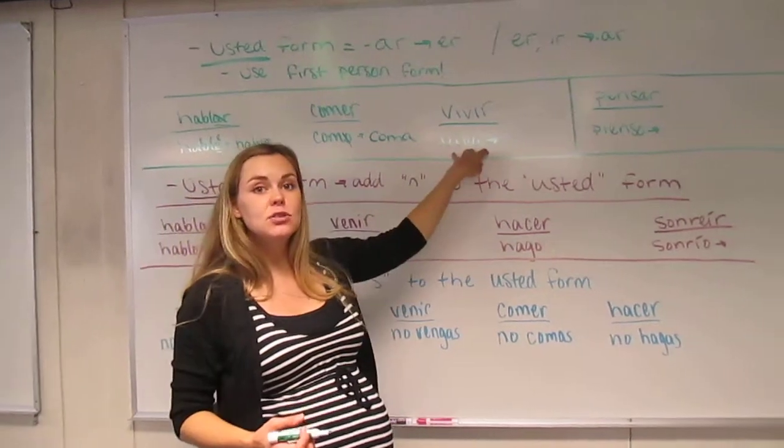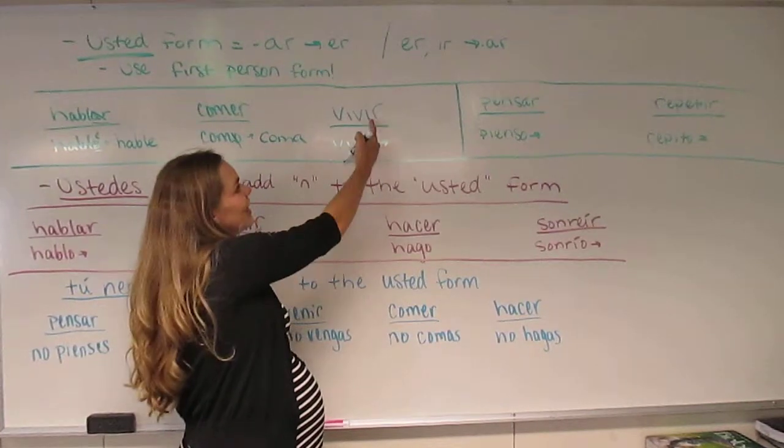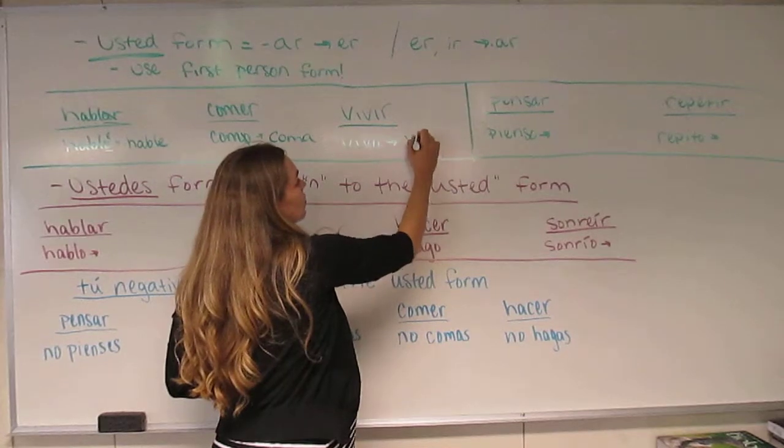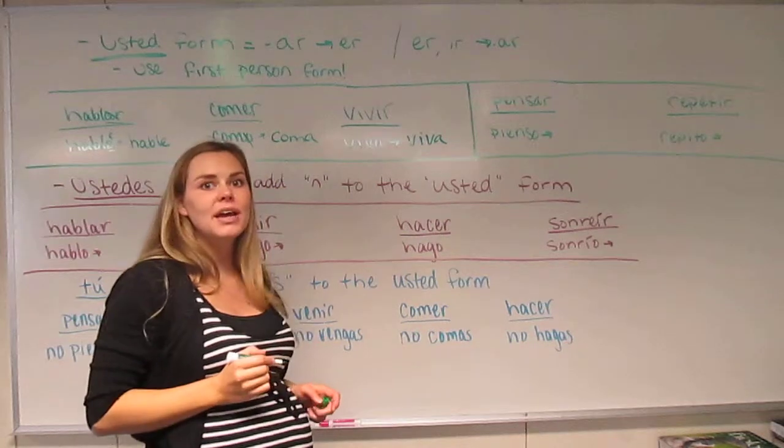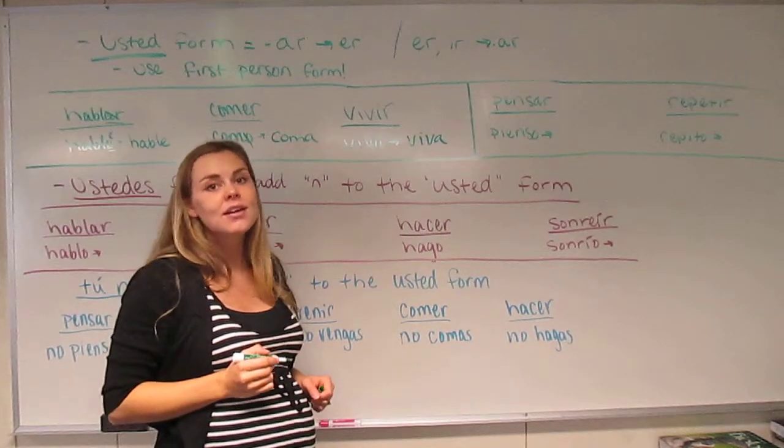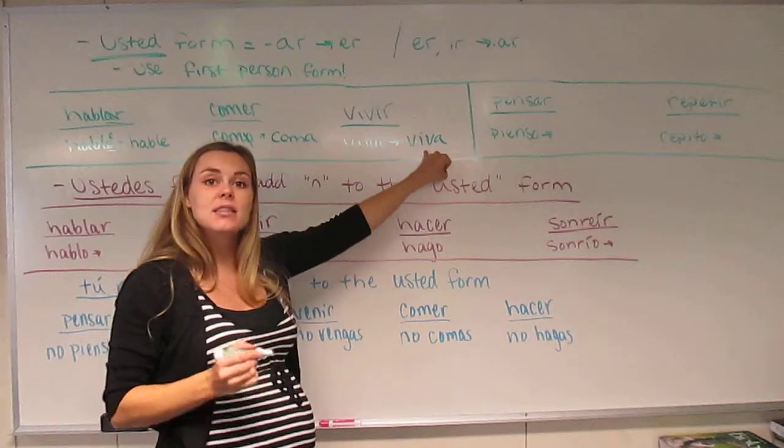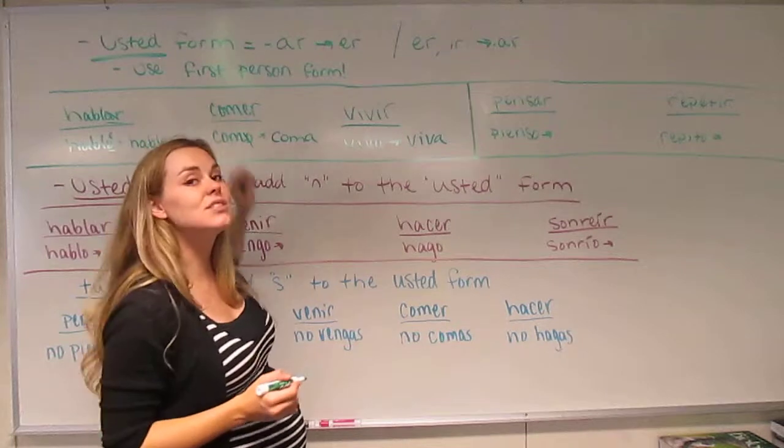If you wanted to tell somebody to live, this is the first person, vivo, it's an IR verb, so it's going to change to AR. So what would it be? Vivo, ah, that's right. You all know the Coldplay album Viva La Vida. That's where it comes from. It's a command form. It says, live the life. And they're obviously using the usted form.